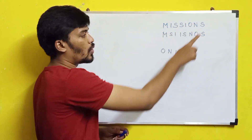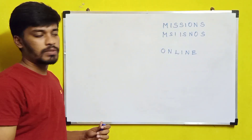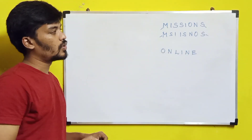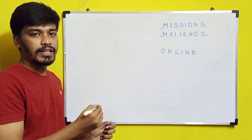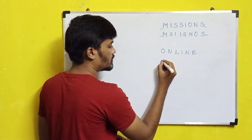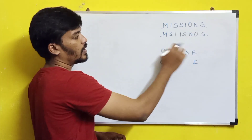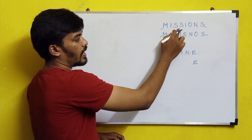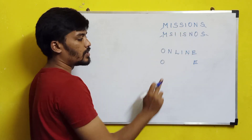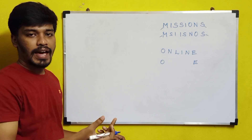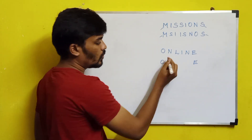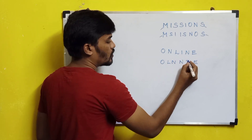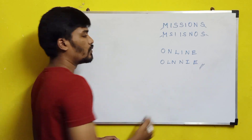We will analyze the pattern used for 'machines.' M is in the same position and S is in the same position — the starting and ending letters remain the same. For 'online' we do the same. Looking at the middle characters: I and S are interchanged, and O and N are interchanged. So in the middle part, pairs of characters are being interchanged. For 'online,' N and L are interchanged, and I and N are interchanged, giving us the answer.